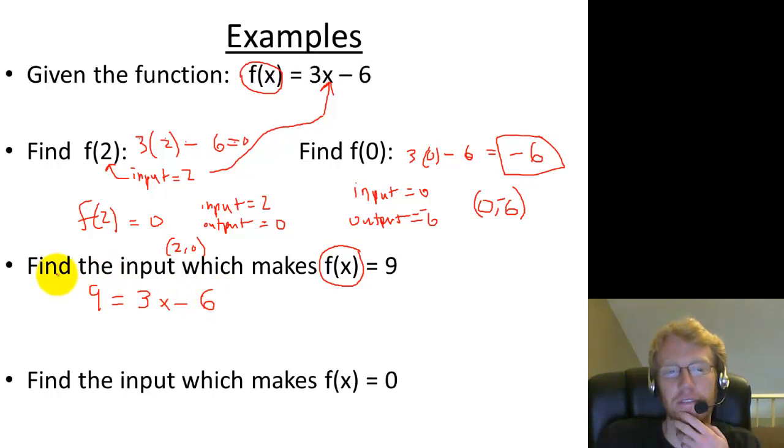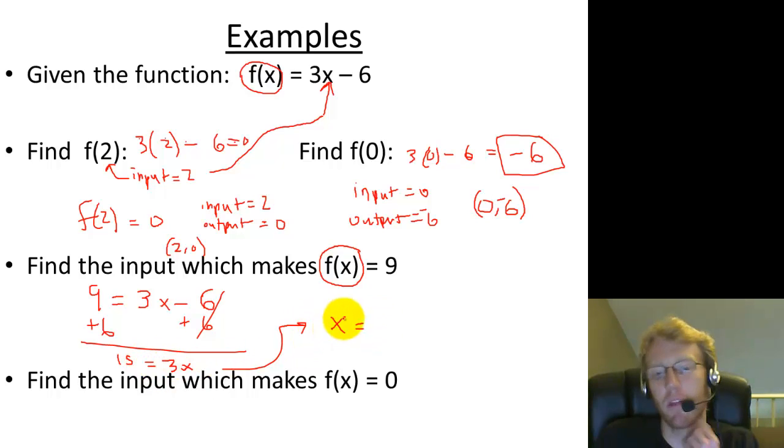So then I get 9 equals, because I plug that in right here, 9 equals 3x minus 6. Okay, and now the question is, find the input. Well, the input is x, so this is great. We've got it set up where I can solve for x. So I'm going to add 6 to both sides, and then I get 15 equals 3x. And I hope you can see that that makes x equal to, divide both sides by 3, x equals 5. So if I put an input of 5, I should get out 9. Let's try it. Let's put a 5 in right here. 3 times 5 is 15, minus 6 is 9. So it works.